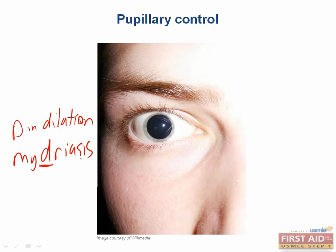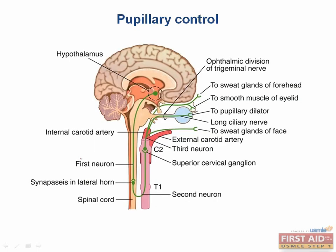Pupils constrict due to parasympathetic tone provided by cranial nerve 3 through the Edinger-Westphal nucleus. Pupils dilate due to primary neurons in the hypothalamus which synapse in the lateral horn. Sympathetic tone is provided through T1 preganglionic nerves, leading to the superior cervical ganglion, then a postganglionic sympathetic nerve, and eventually the long ciliary nerve.